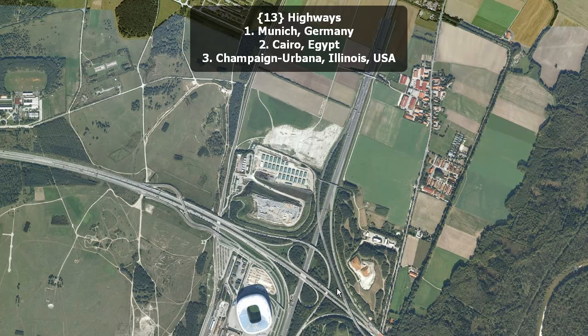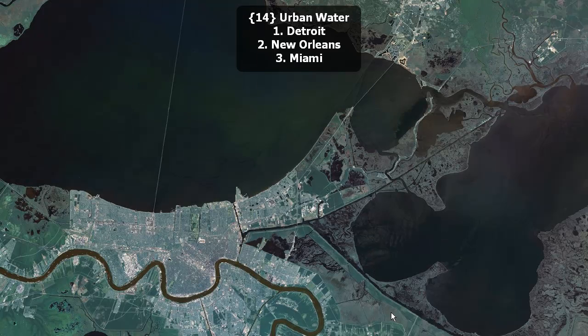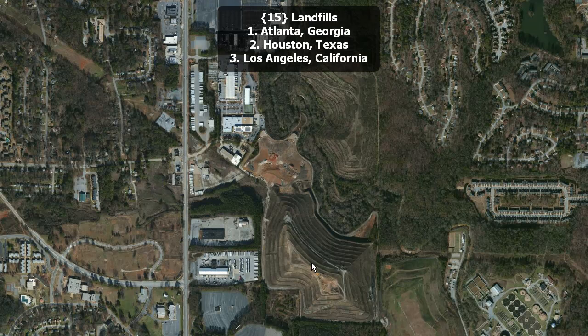Munich, Germany; Cairo, Egypt; or Champaign-Urbana, Illinois, USA? Urban water. Detroit, New Orleans, or Miami? Landfills. Atlanta, Georgia; Houston, Texas; or Los Angeles, California? What about the vegetation might give you a clue?